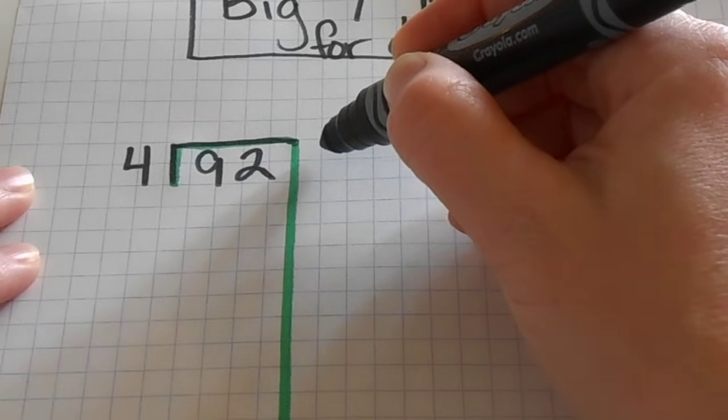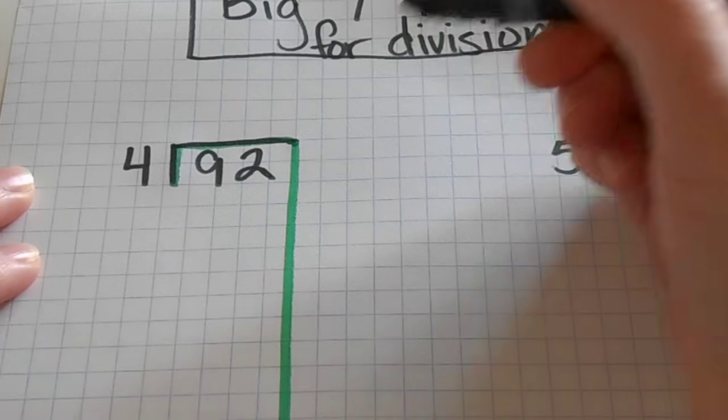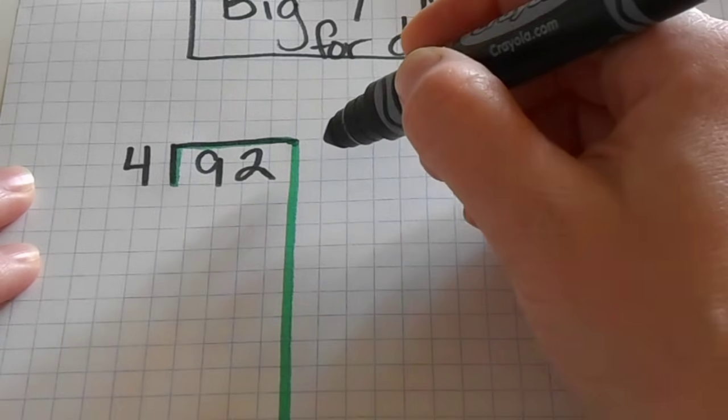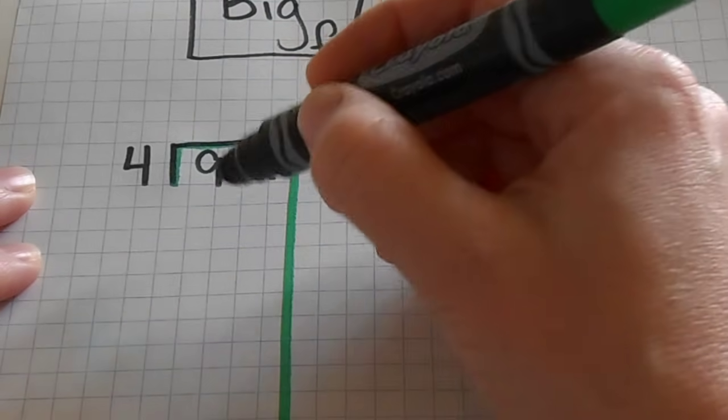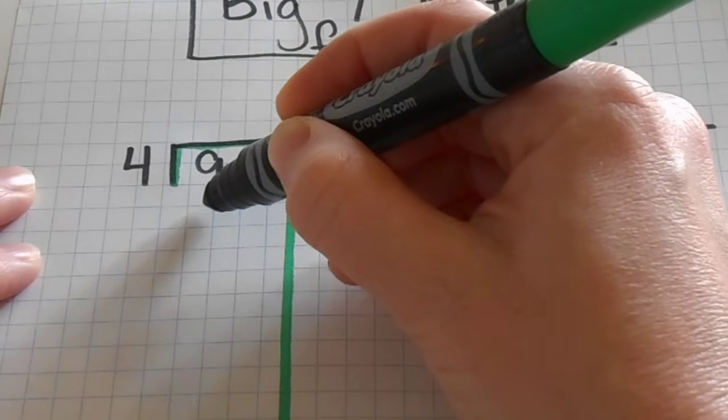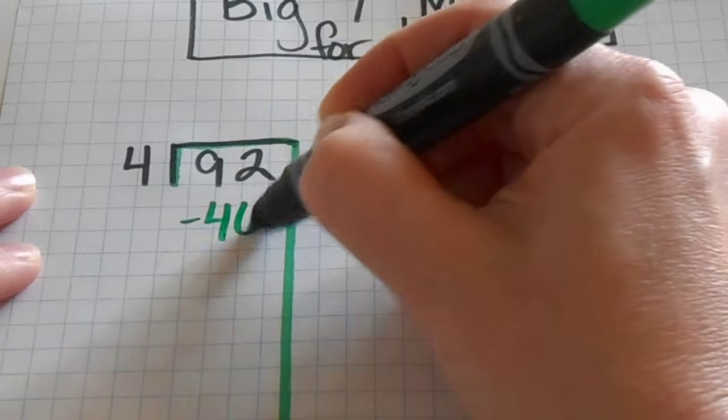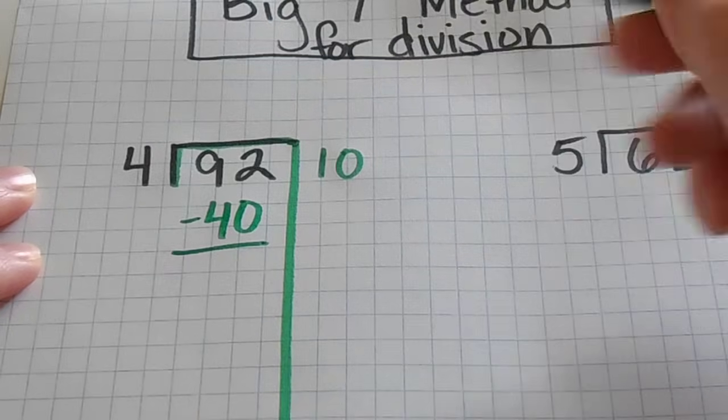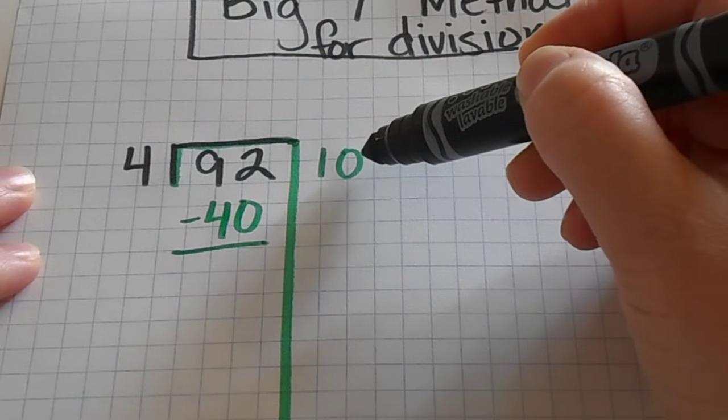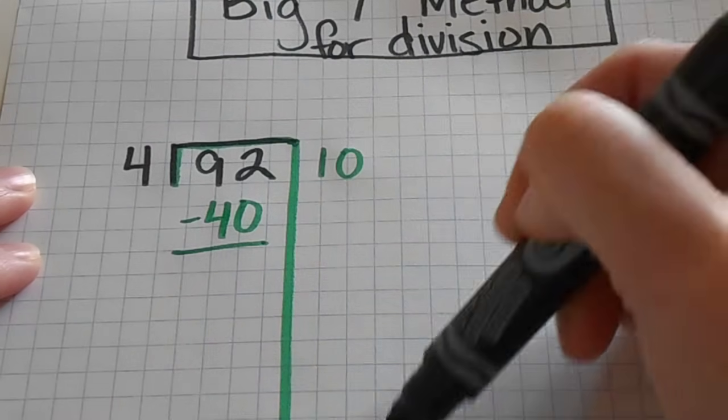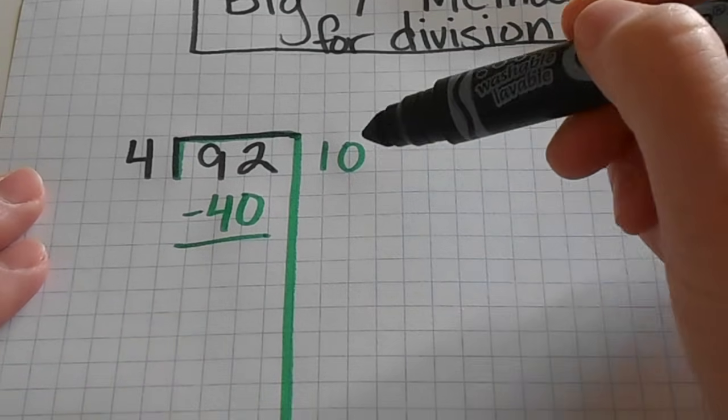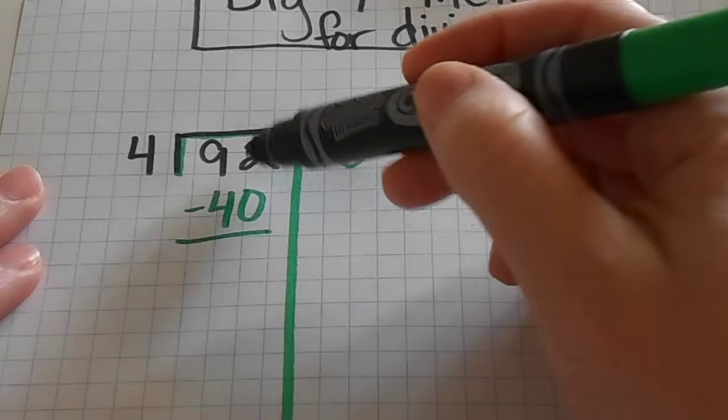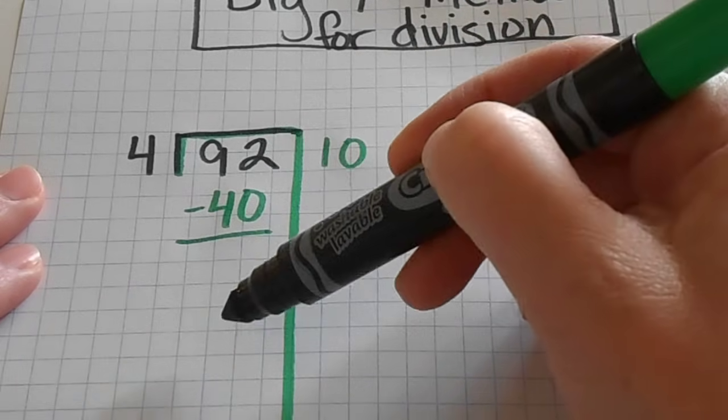So I'm going to actually take out groups of four. And what I like to teach my students is pick an easy number of groups of four to take out, like 10. If I take out 10 groups of four, then I am actually just taking out 40 out of 92. And now I wrote the 10 over here on the side because this area over here is just going to be where I'm going to keep track of how many fours I am taking out of 92. And then this area is where I'm actually going to subtract them.